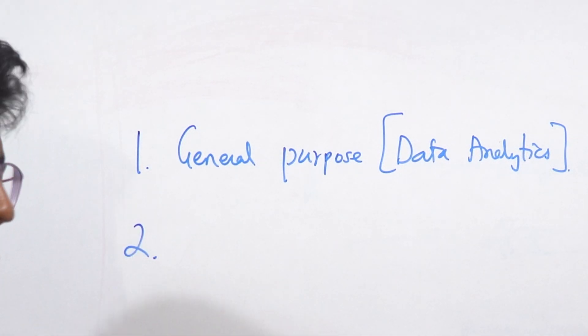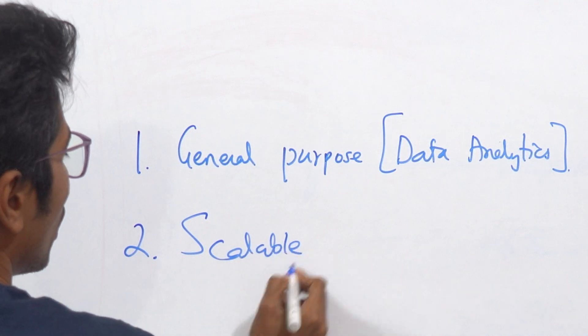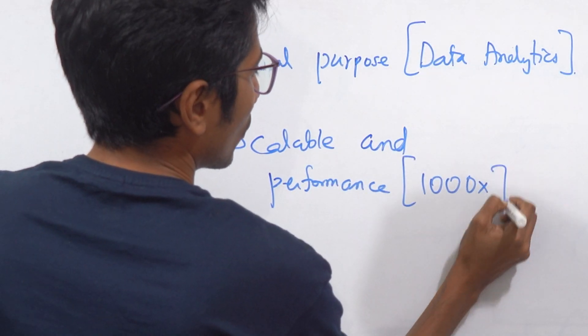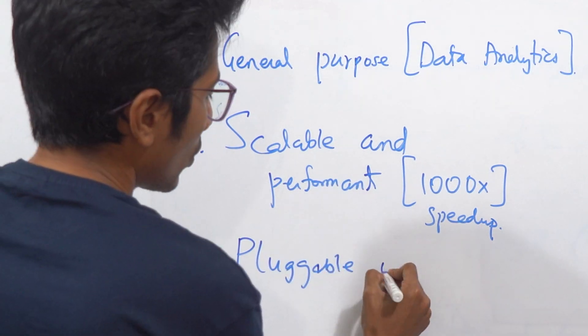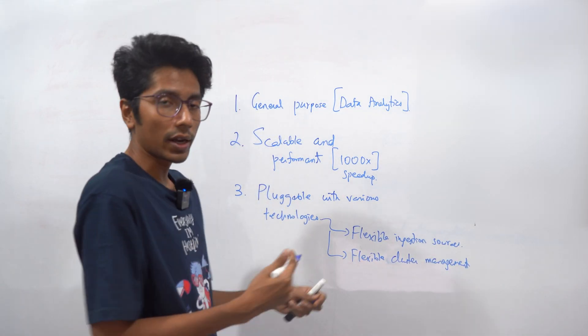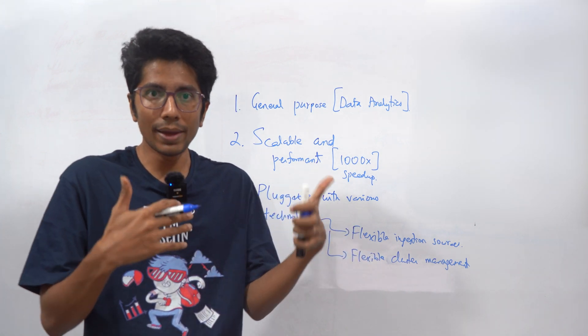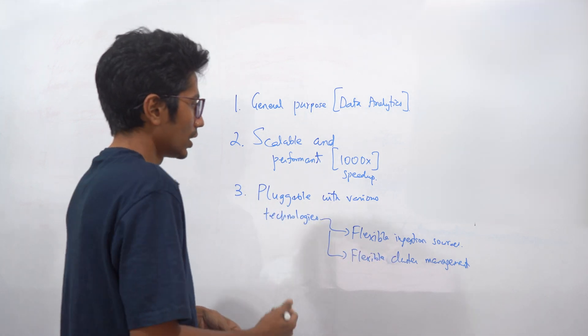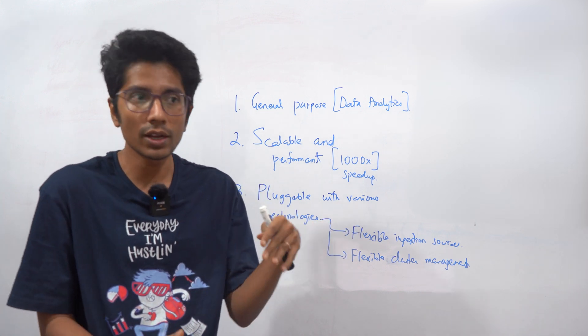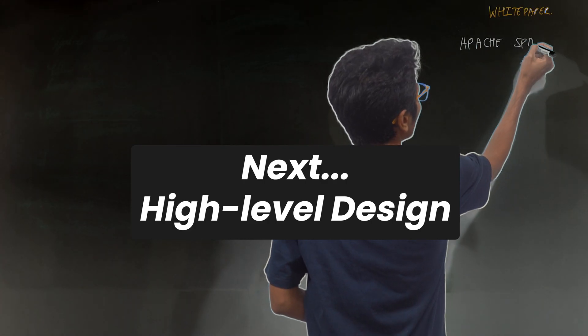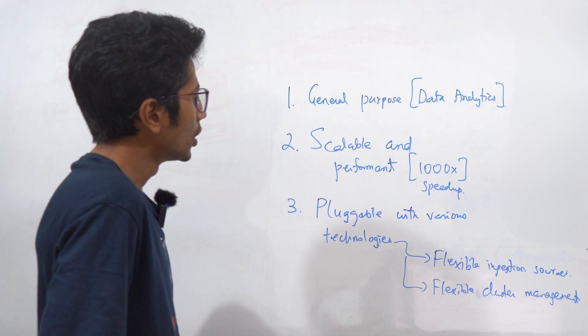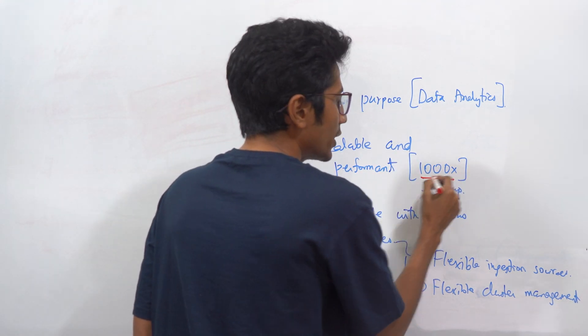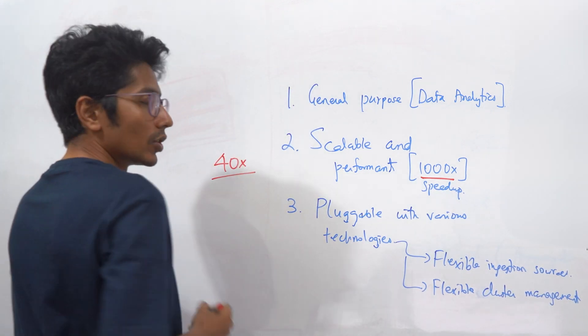The second thing about Spark is that it is extremely scalable but it's also extremely performant. This is much faster than MapReduce. It's in some cases a thousand times faster than MapReduce. We'll see why. And finally it is pluggable with various technologies. So if you want to run Spark with Kubernetes that's possible. If your nodes are going to be all managed by Kubernetes that's possible. You can use Mesos. You can use any other cluster manager and Spark will not care.